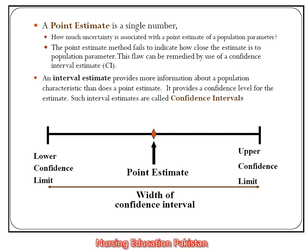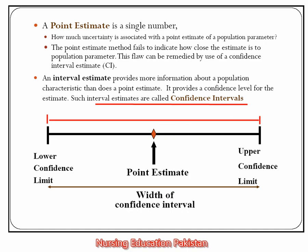The confidence interval gives us an interval. We have a sample mean and we identify the estimate, which we infer and generalize to the population — and these two interval limits are formed. We call this an interval estimate, and also a confidence interval, because this interval provides confidence that our expected value, which we have inferred, will fall within this range. So, this is a lower confidence limit and an upper confidence limit, and this is our estimate.